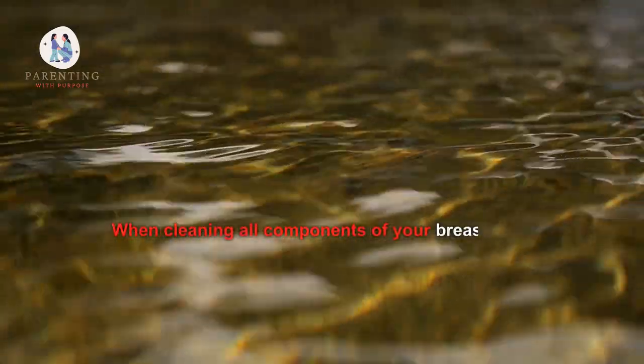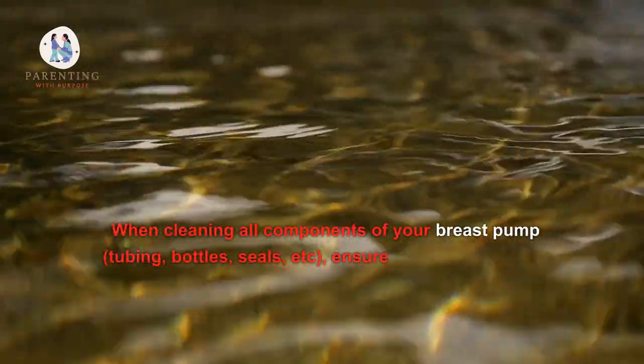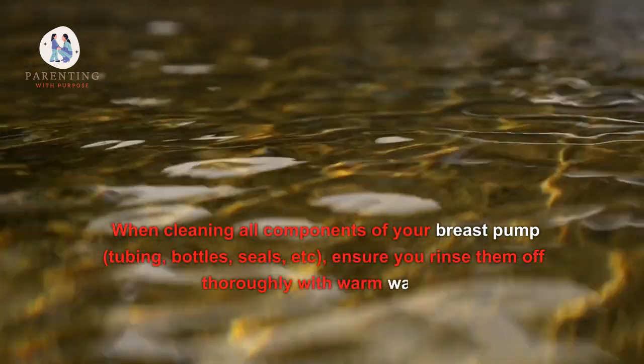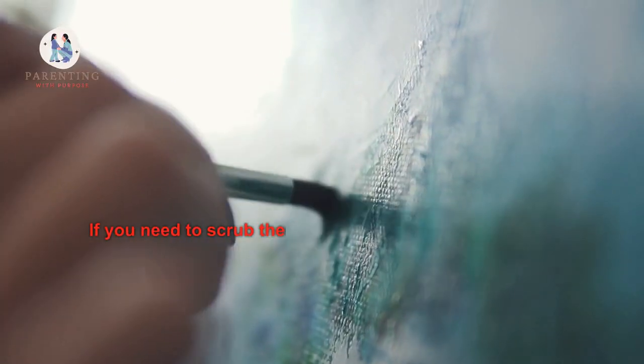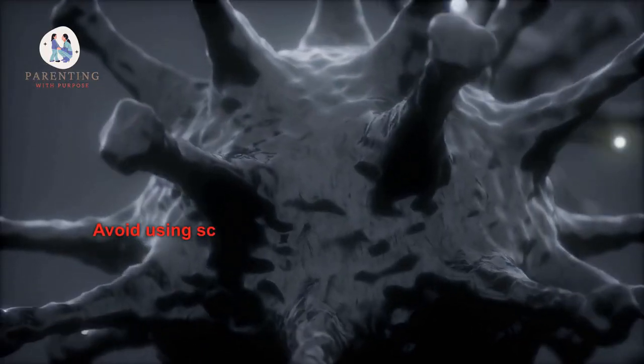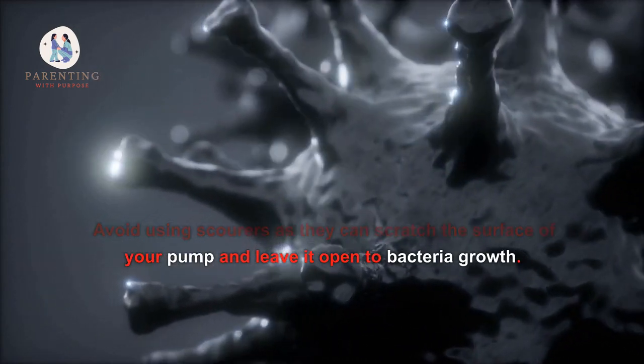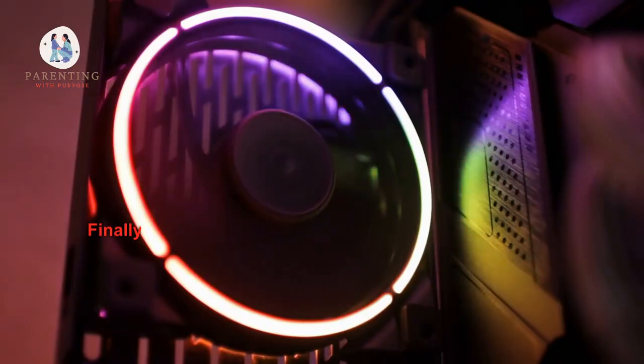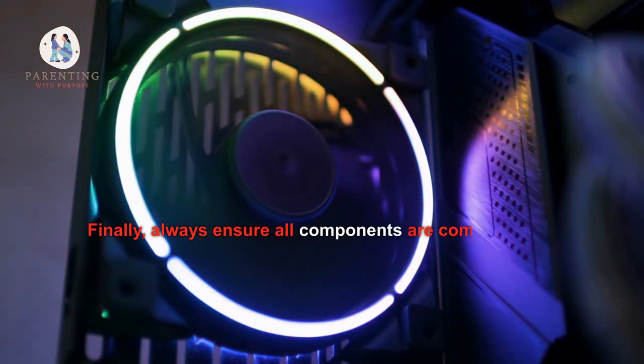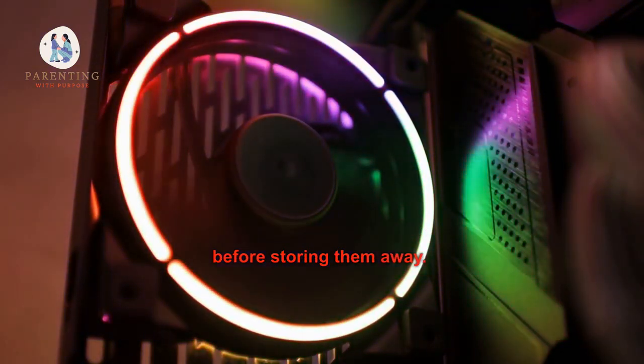When cleaning all components of your breast pump—tubing, bottles, seals, etc.—ensure you rinse them off thoroughly with warm water. If you need to scrub them down, use a soft brush or cloth and scrub gently. Avoid using scourers as they can scratch the surface of your pump and leave it open to bacteria growth. Finally, always ensure all components are completely dry before storing them away.